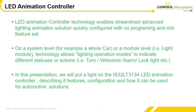On a system level, for example a whole car, or a module level such as a light module, the technology allows lighting operation modes to indicate different statuses or actions — turn, welcome, alarm, lock light, etc. In this presentation, we will put a light on the IS32LT3134 LED animation controller describing its features, configuration, and how it can be used for automotive solutions.